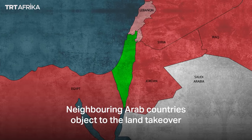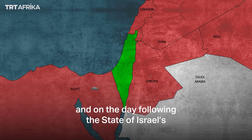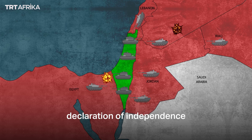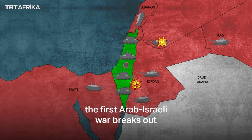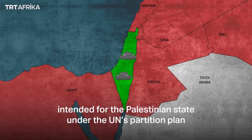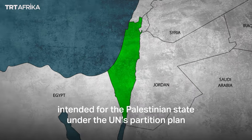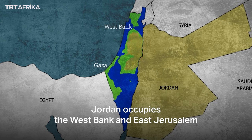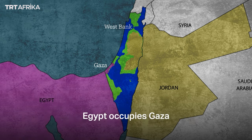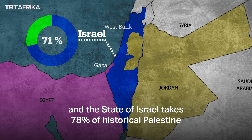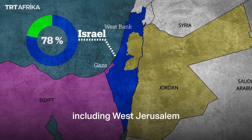Neighboring Arab countries objected to the land takeover, and on the day following Israel's declaration of independence, the first Arab-Israeli war broke out. Israel was victorious and seized land intended for the Palestinian state under the UN's partition plan. The land was divided into three parts: Jordan occupied the West Bank and East Jerusalem, Egypt occupied Gaza, and the State of Israel took 78% of historical Palestine, including West Jerusalem.